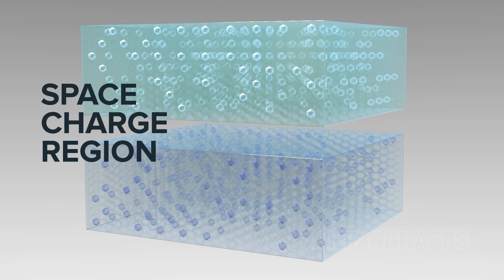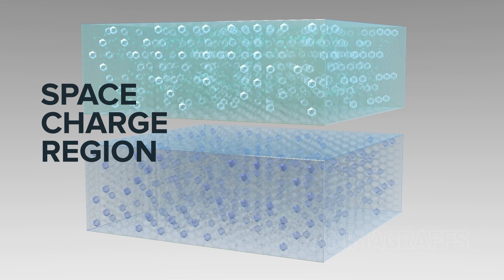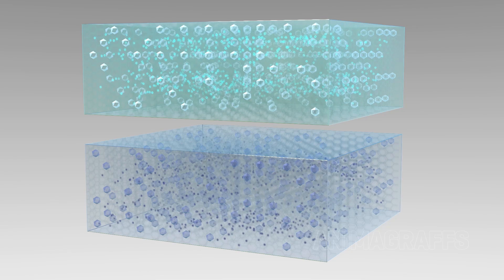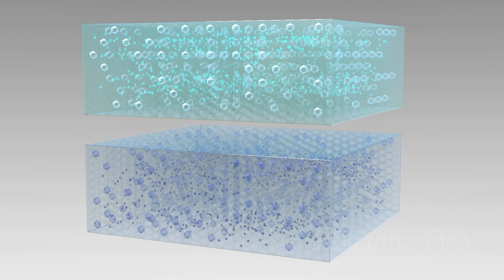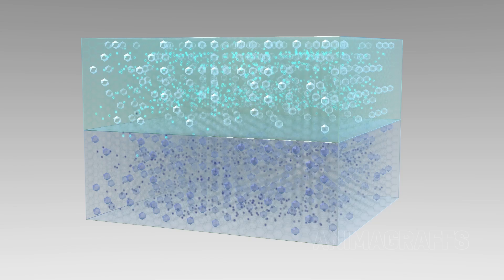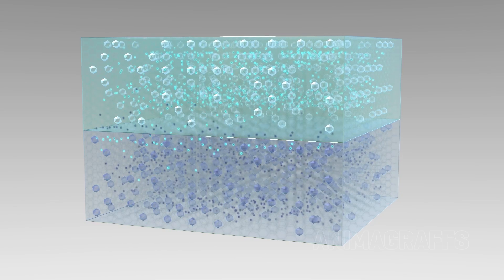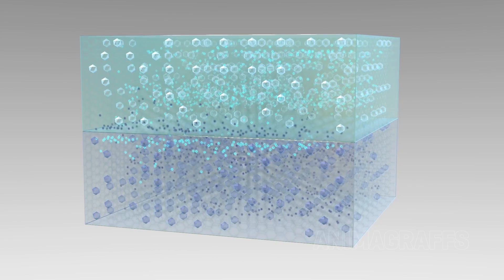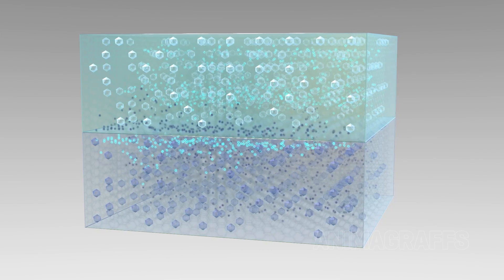The space charge region forms at the junction where P- and N-type silicon meet. When these doped silicon types are layered, unequal electrons and available spaces, or holes, naturally seek to recombine across the junction, attempting to equalize.